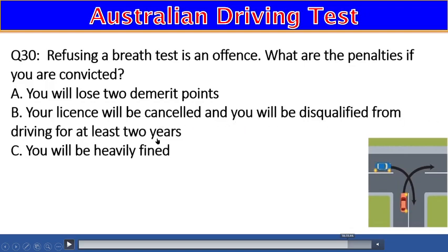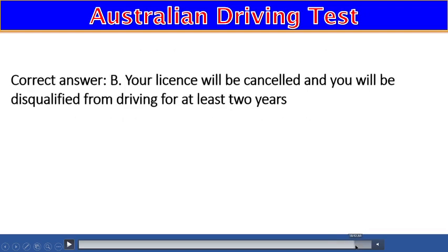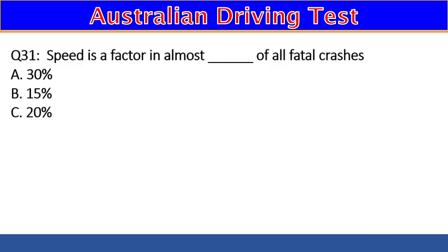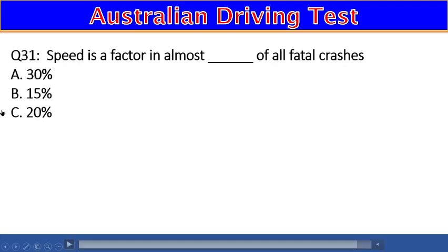Question 31: Speed is a factor in almost all fatal crashes. What percentage of crashes is speed responsible for? A) 30%, B) 15%, C) 20%. The right answer is C — 20%.